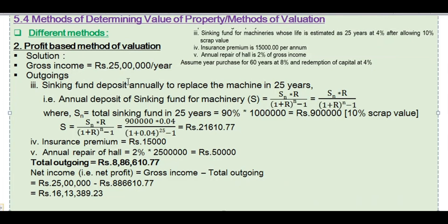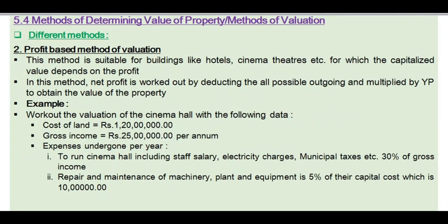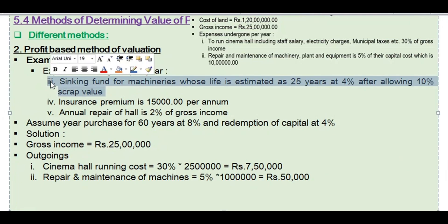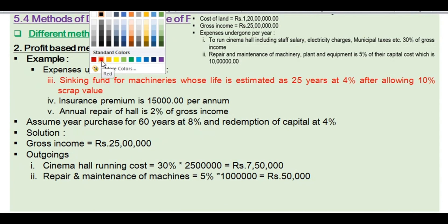The third outgoing is the sinking fund deposit annually to replace the machine in 25 years. This is the sinking fund for machineries whose life is estimated as 25 years at 4% after allowing 10% scrap value.